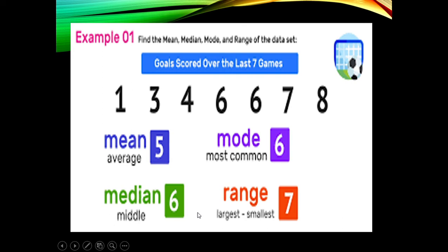So we have here an example to illustrate that further. Here in the given set, 1, 3, 4, 6, 6, 7, 8. So the mean is 5, and the mode is 6. It is frequently appeared number.